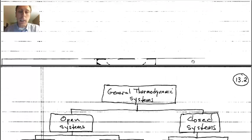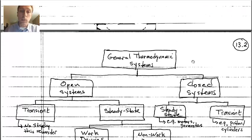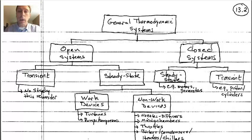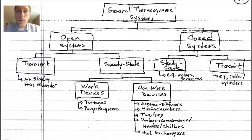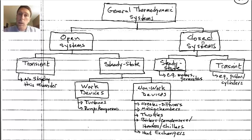Today we're continuing what we started last Tuesday before the exam. We had this large block diagram of what we cover this semester. We have our general thermodynamic system, which we decompose into one of two types: either an open system, in which case there is mass transfer, or a closed system, in which case there is no mass transfer.